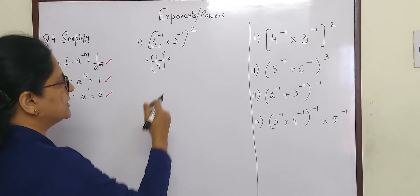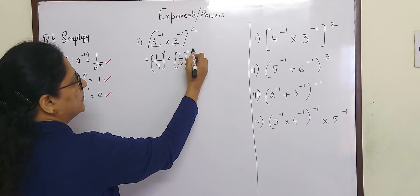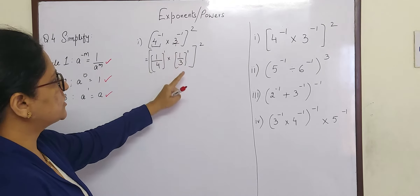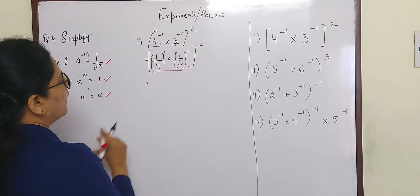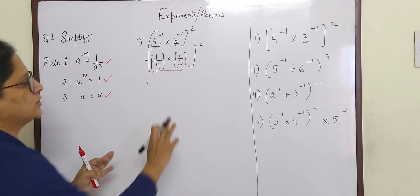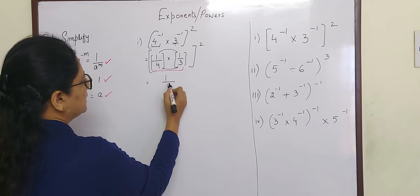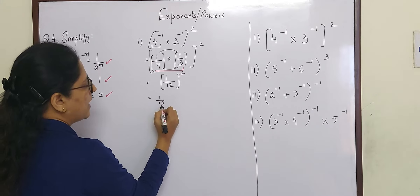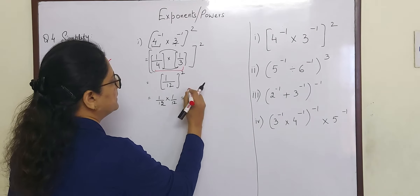Now 3 raised to minus 1 is nothing but 3 by 1 raised to minus 1. So what is the reciprocal of 3 by 1? It is 1 by 3 raised to 1, the whole raised to 2. So I have converted 4 raised to minus 1 into 1 by 4, and 3 raised to minus 1 into 1 by 3. Now I have the positive exponents, so I can multiply these two. 1 by 4 into 1 by 3 is 1 by 12, the whole square. Square means this base 1 by 12 has to be multiplied 2 times. 1 by 12 into 1 by 12 is equal to 1 by 144, and that will be your final answer.